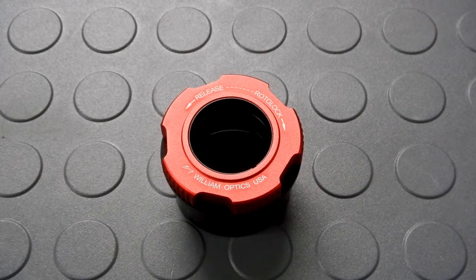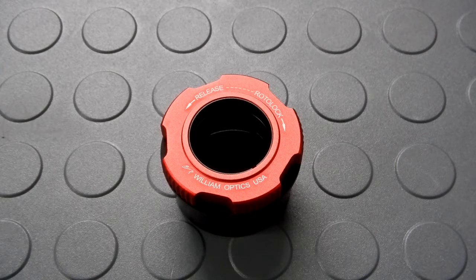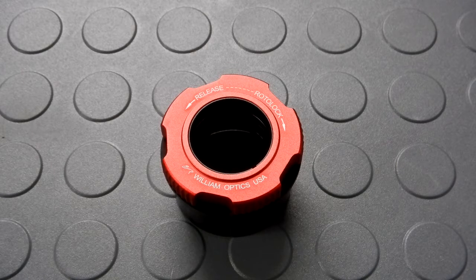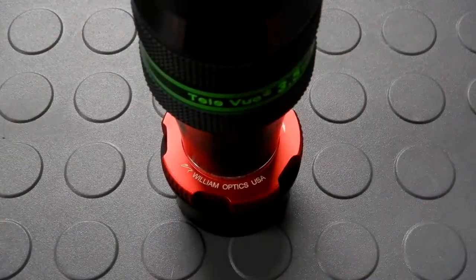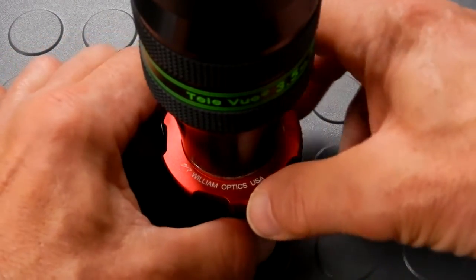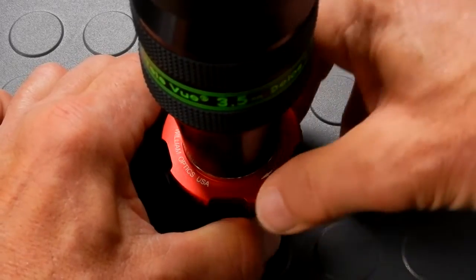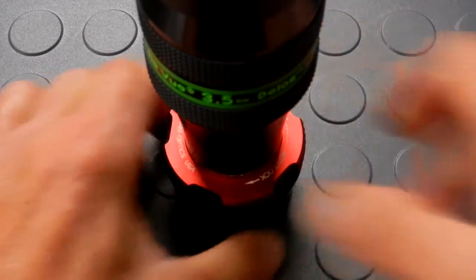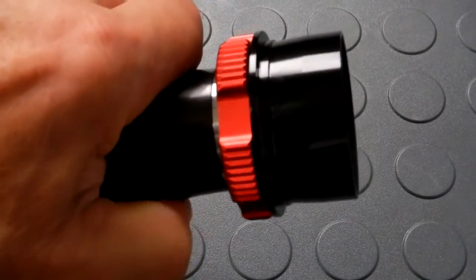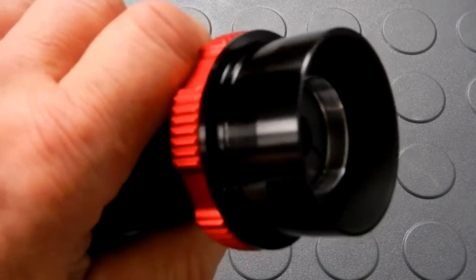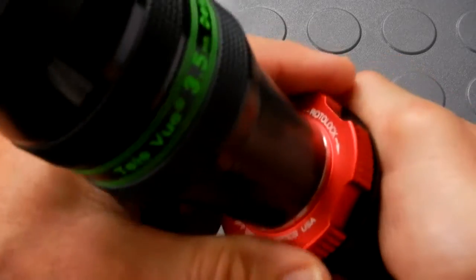So let's try this with my Tele Vue 3.5 millimeter Delos. We'll stick that in there like that and we'll just tighten down the ring. And let's see - that's on there. And it didn't even take much of a turn.